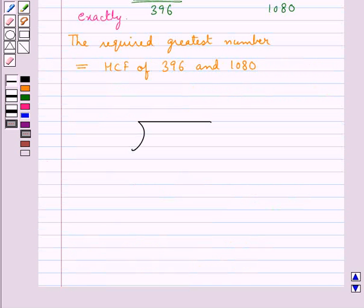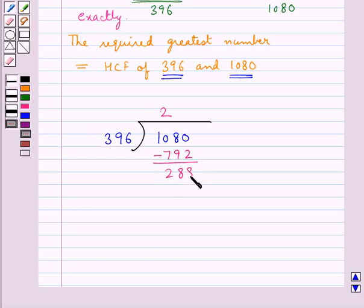To find the HCF of these two numbers, first we divide the greater number that is 1080 by the smaller number that is 396. So 396 two times is 792, then we subtract 792 from 1080 to get 288 as the remainder.